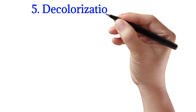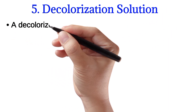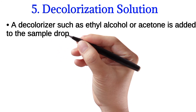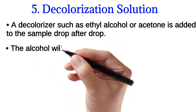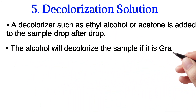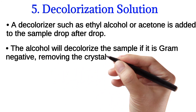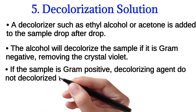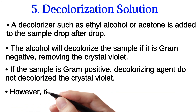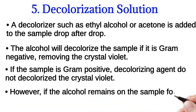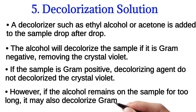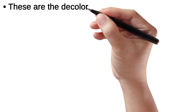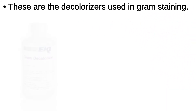Decolorization solution. A decolorizer such as ethyl alcohol or acetone is added to the sample drop by drop. The alcohol will decolorize the sample if it is Gram negative, removing the crystal violet. If the sample is Gram positive, the decolorizing agent does not decolorize the crystal violet. However, if alcohol remains on the sample for too long, it may decolorize Gram positive cells. These are the decolorizers used in Gram staining.